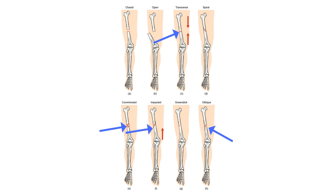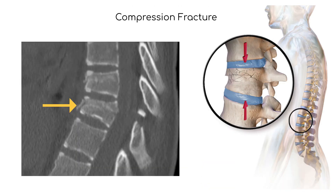Impacted fractures are where the broken parts of the bone are jammed together, and spiral fractures have a circular shape and occur from a twisting force. Compression fractures occur in the spine from a compressive force, in which the vertebral body sustains fractures and decreases in size.